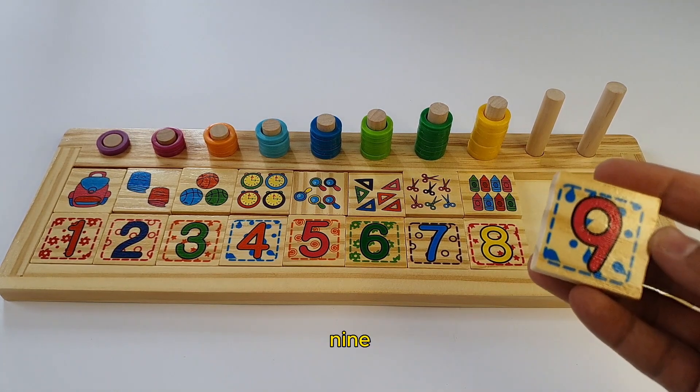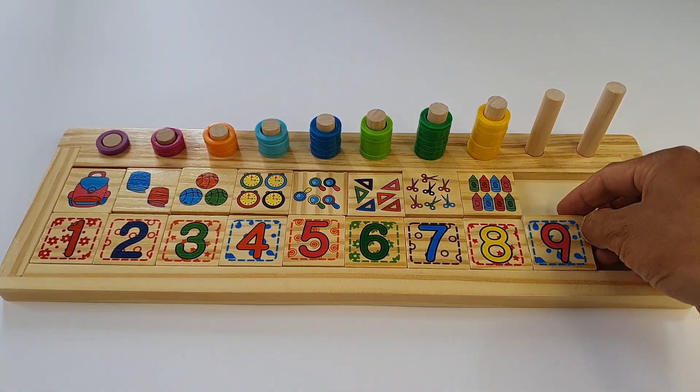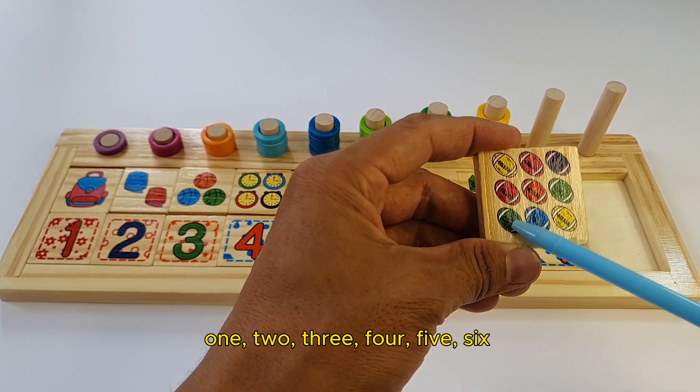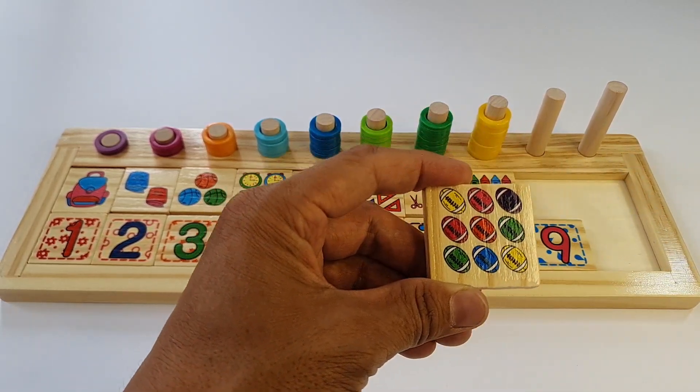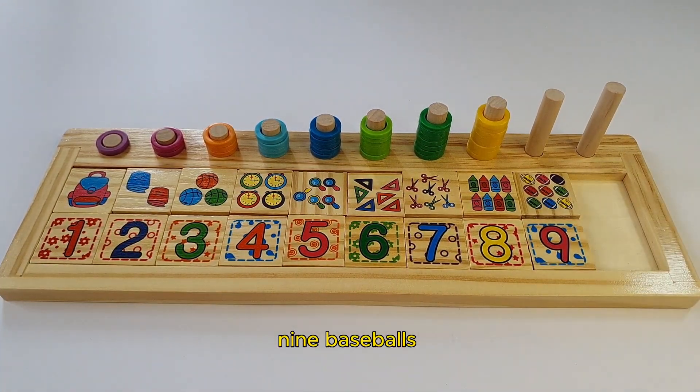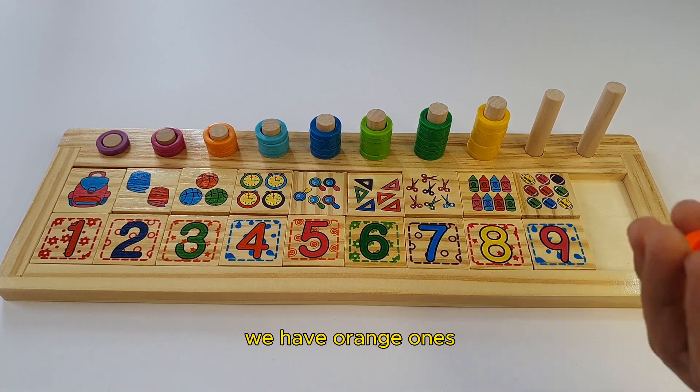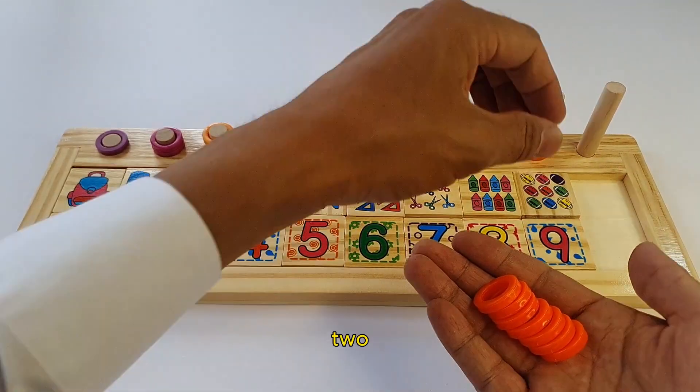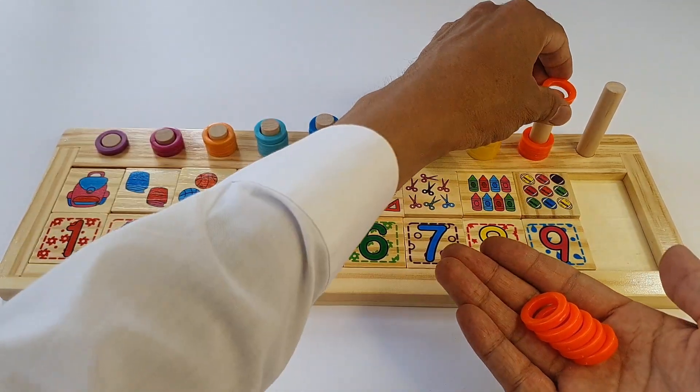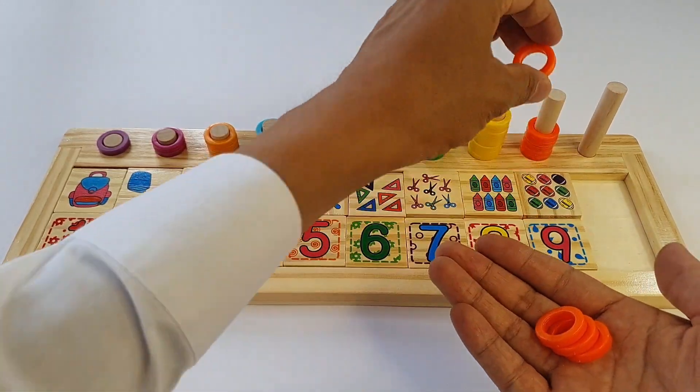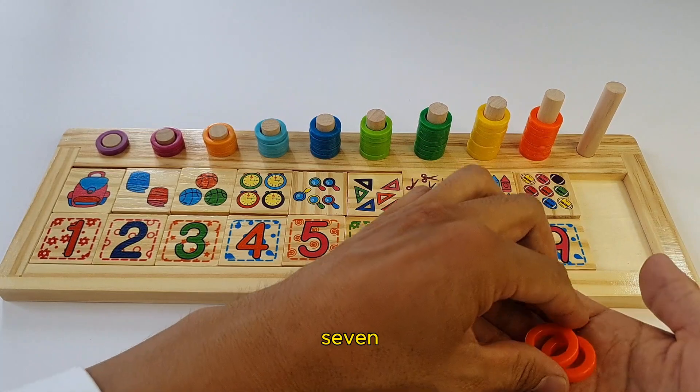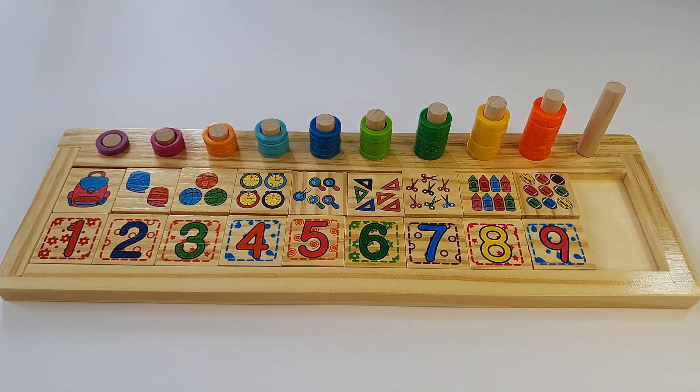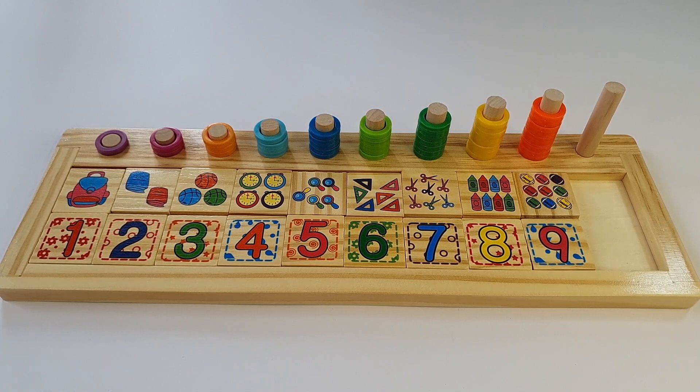The next is nine. Let us see, we have baseballs. One, two, three, four, five, six, seven, eight, nine. Nine baseballs and as for rings, let us see, oh we have orange ones. One, two, three, four, five, six, seven, eight, nine.